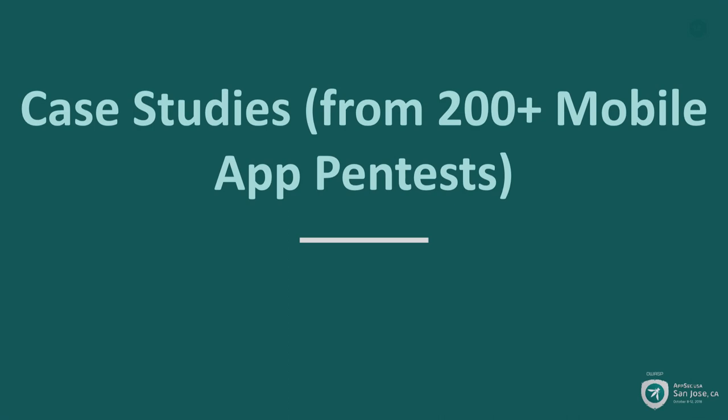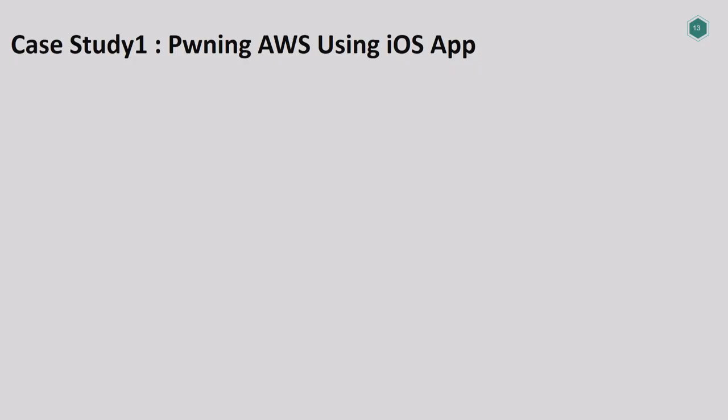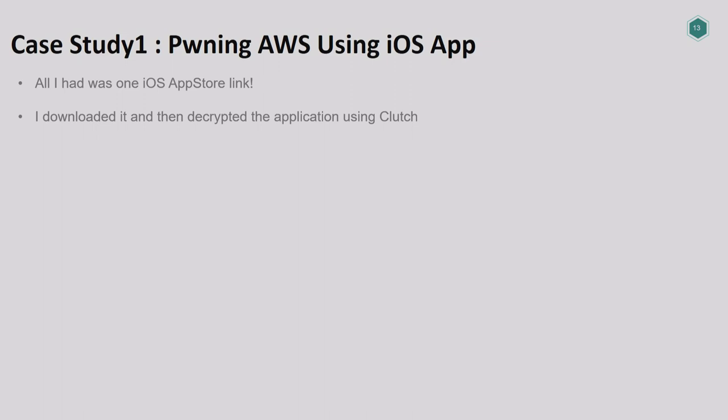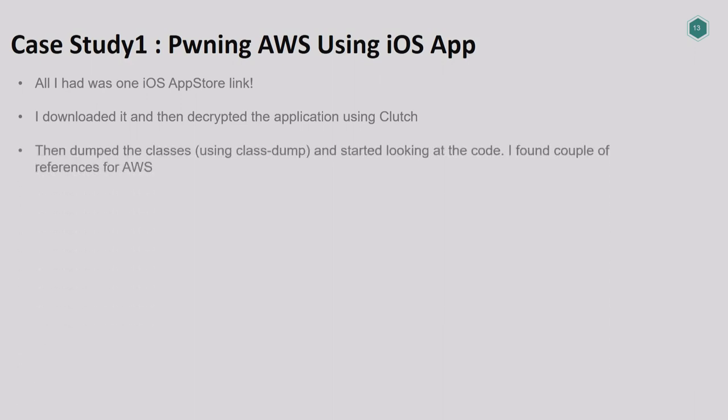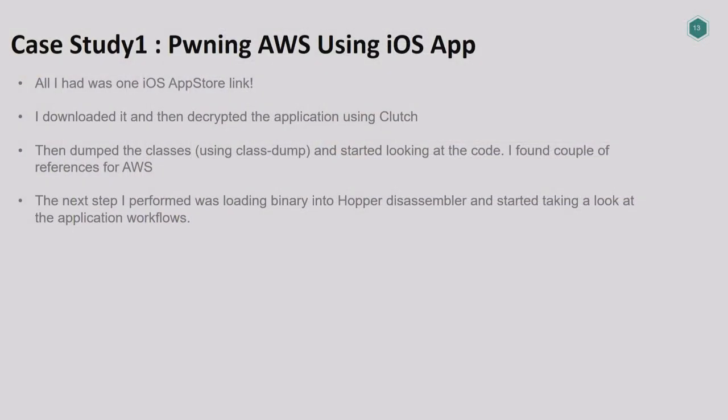I've done pen testing a lot, with more focus towards mobile applications. Here are some critical findings from over 200 mobile application assessments. The first case study is very interesting: I was able to own the AWS of an enterprise just by using an iOS application. During a black box assessment, all I got was the iOS App Store link. I downloaded and decrypted the application using Clutch, then dumped the classes using Clutch and DumpSys, and found some references to AWS. I loaded the binary into Hopper disassembler — which is like IDA Pro for iOS binaries — and found suspicious references.